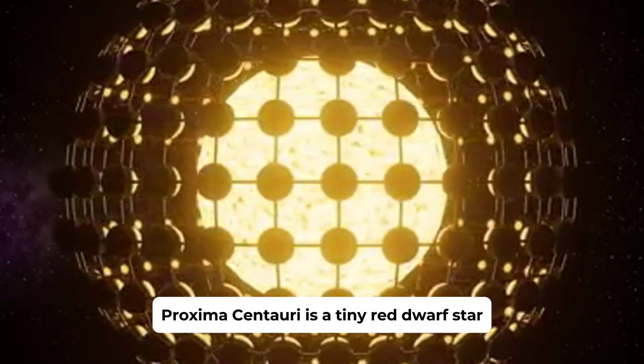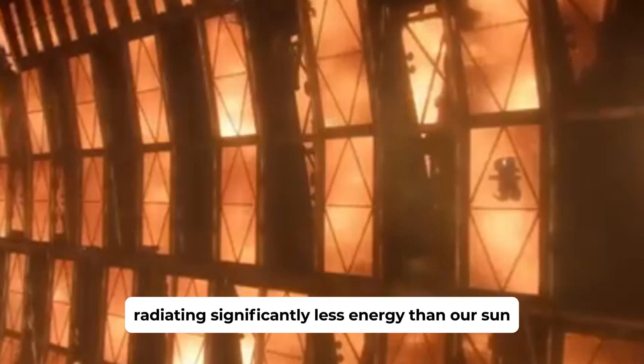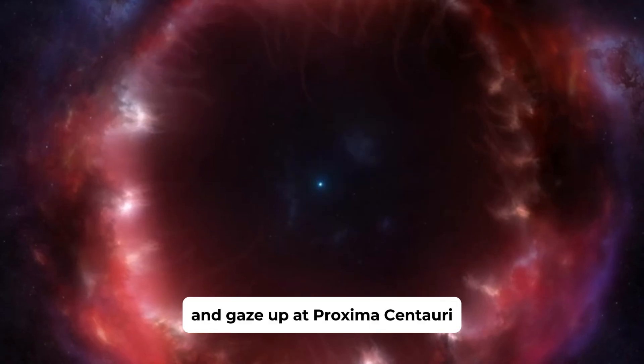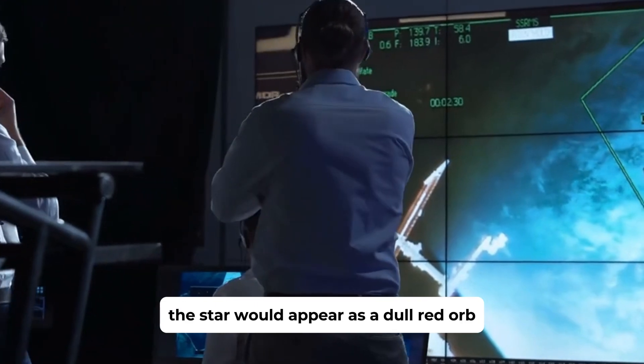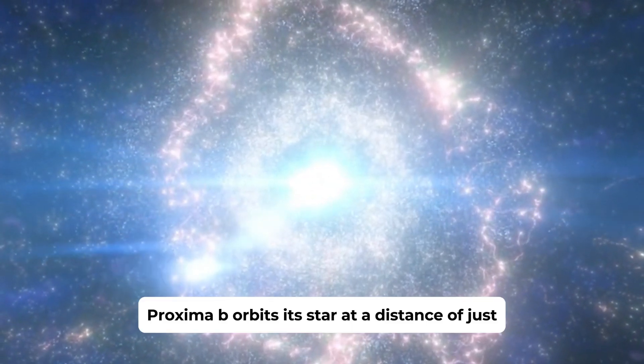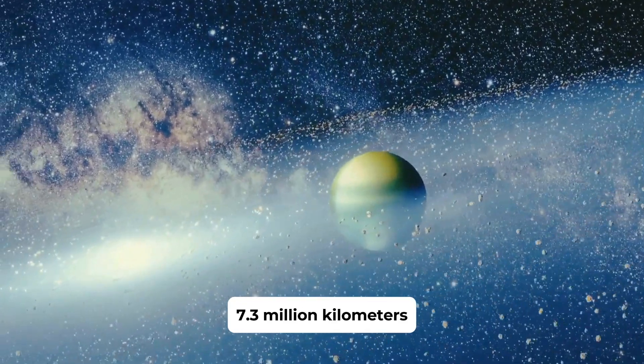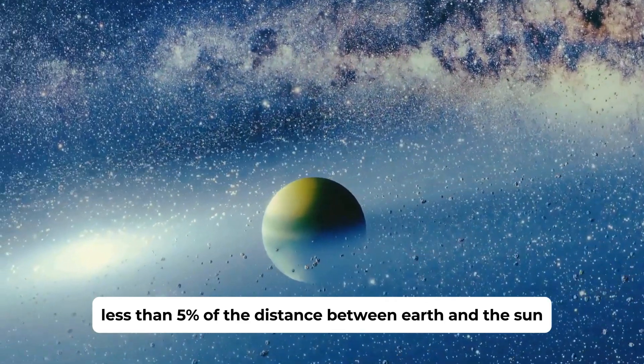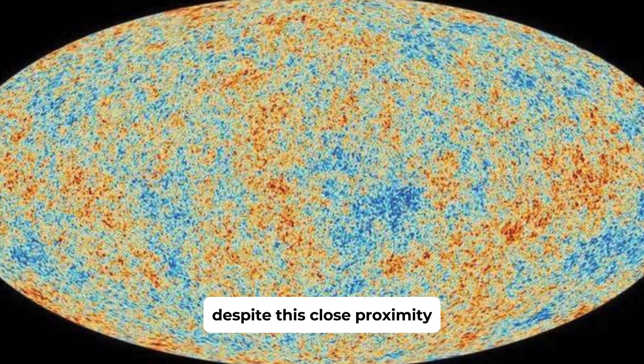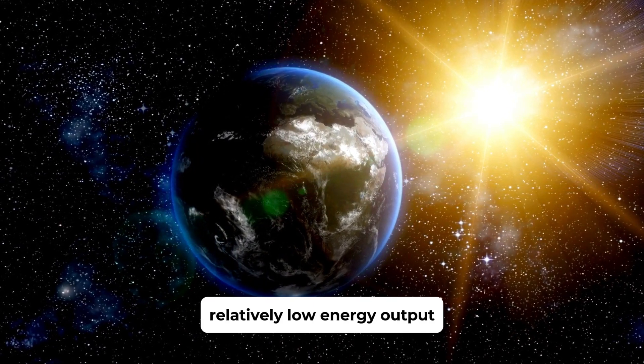Proxima Centauri is a tiny red dwarf star radiating significantly less energy than our Sun. If you were to stand on the surface of Proxima b and gaze up at Proxima Centauri, the star would appear as a dull red orb roughly three times the size of our Sun. Proxima b orbits its star at a distance of just 7.3 million kilometers, less than 5% of the distance between Earth and the Sun. Despite this close proximity, the planet's surface conditions are shaped by the star's relatively low energy output.